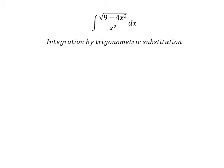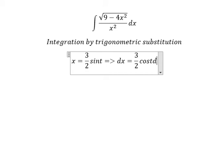So in here we put x equal to 3 over 2 sine t, dx equal to 3 over 2 cosine t dt.